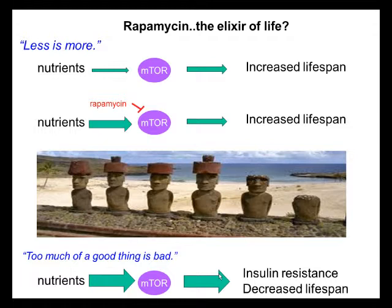mTOR stands for mechanistic target of rapamycin. Studies through the years have revealed that mTOR plays a central role in cellular metabolism. It controls cell growth in response to the presence of nutrients, and it performs its function by controlling a number of anabolic processes to allow cells to grow and divide.